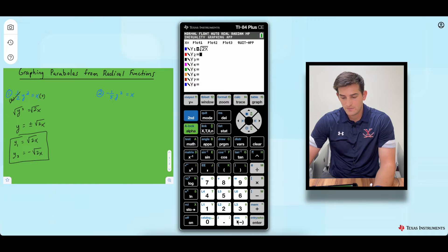Now go down to y2 and we're going to do negative, which is down here at the bottom next to enter. It is not the subtraction button. If you click that, you're going to get an error. So negative, and then same thing, second x squared, and then we have 2x.